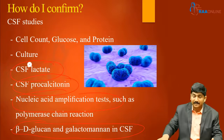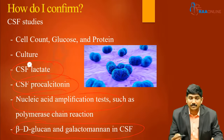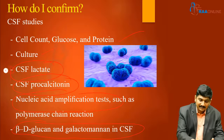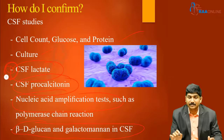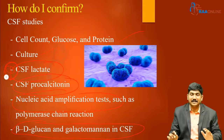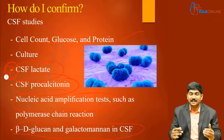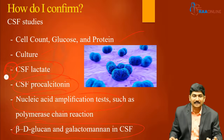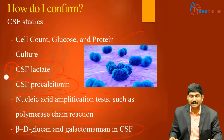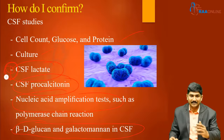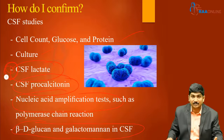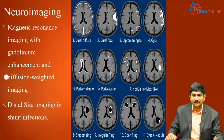Importantly, even if cell count, glucose, and proteins are completely normal and cultures are negative, a CSF lactate above 4 can itself be taken as a sign of meningitis. CSF lactate can also serve as a marker of treatment response — repeat the analysis after four to five days and check for improvement in lactate to confirm you are progressing in the right direction. CSF procalcitonin can be used similarly, just as serum procalcitonin is used.